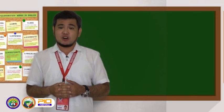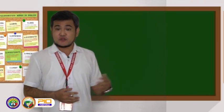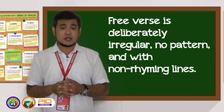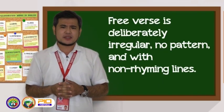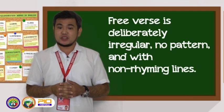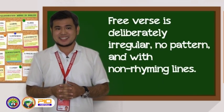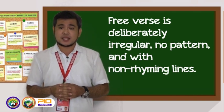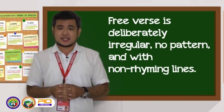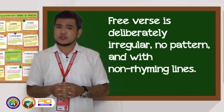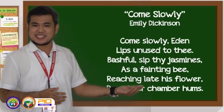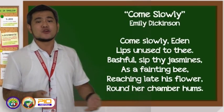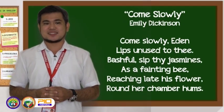Our next type of poem is called free verse. It is deliberately irregular, with no pattern and non-rhyming lines. It is free of traditional rhyme, metrical, and stanza patterns. Let me show you an example of a free verse poem written by Emily Dickinson.